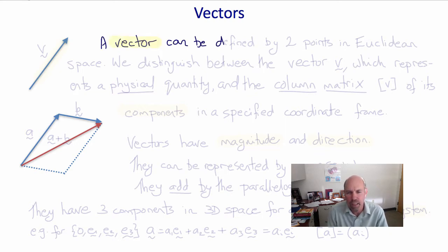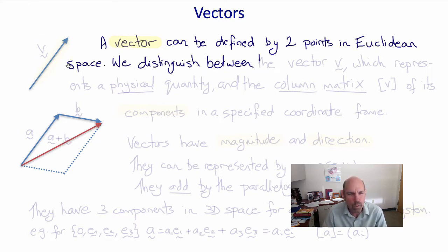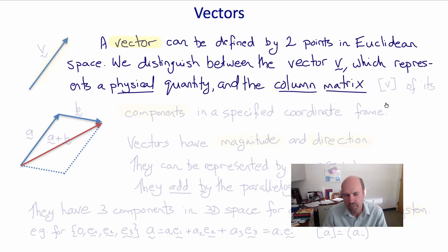A vector can be defined by two points in Euclidean space. We distinguish between the vector v, which represents a physical quantity, and the column matrix v of its components in a specific coordinate frame of reference.